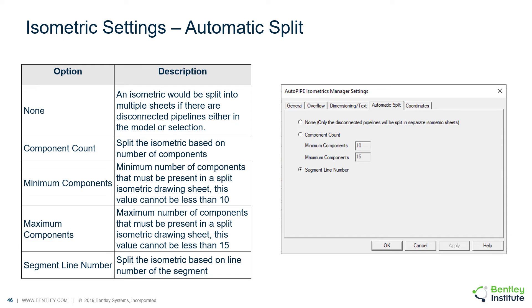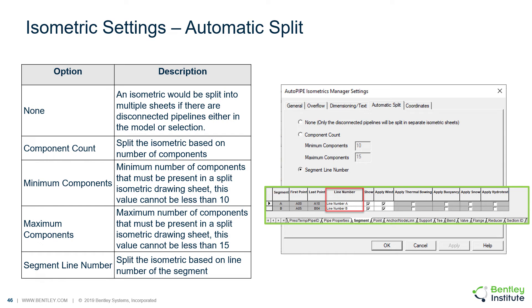Next is the automatic split tab for user input on where the drawing should be split. If none is selected, an isometric would be split into multiple sheets only if there are disconnected pipelines either in the model or in the selection. The user can choose to split the isometric based on a number of components by putting in a minimum and maximum number of components allowed on a single sheet. Or the user can split the isometrics by segment line number, so if the line number is provided on the segment tab of the input grid, you can choose this option.